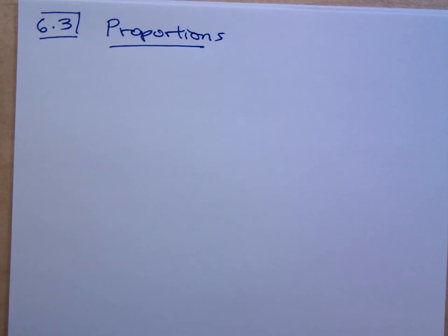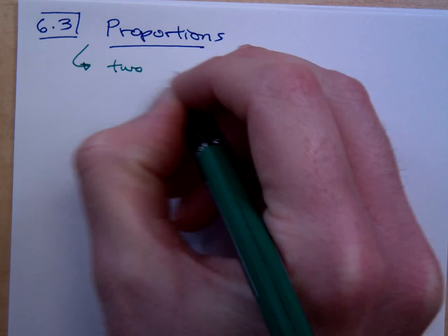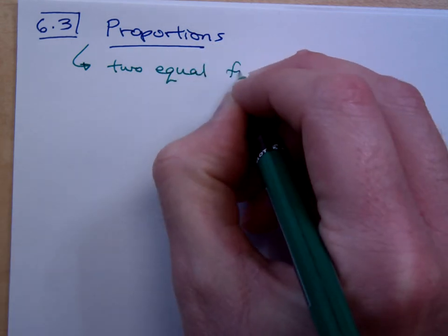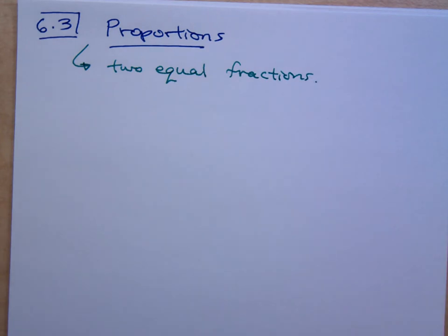Here is section 6.3, and it's all about proportions. Here's what you need to understand about a proportion. Easy thing here, this would be two equal fractions. That's what a proportion is. It's two fractions that are equal.